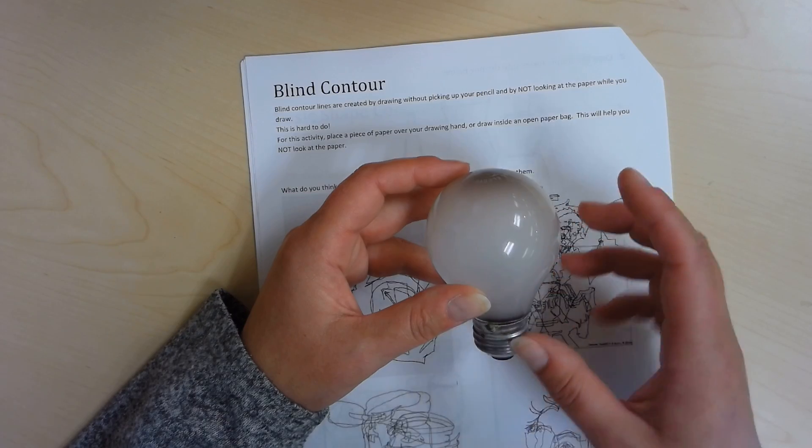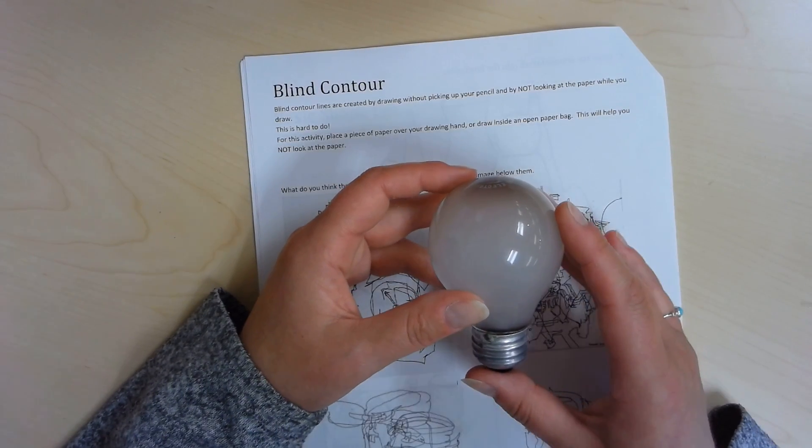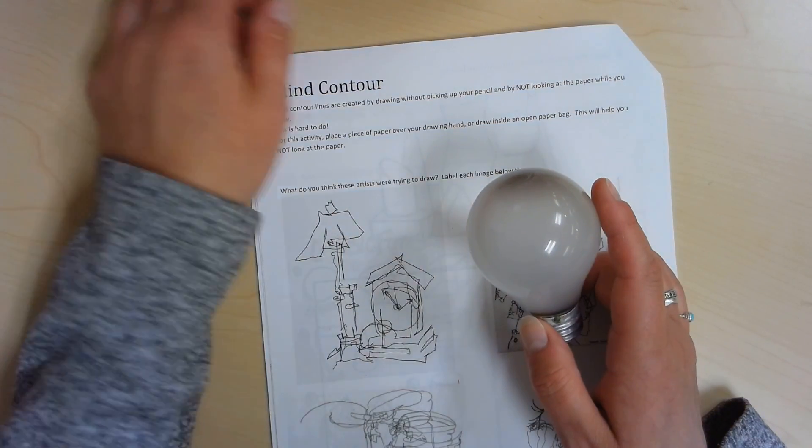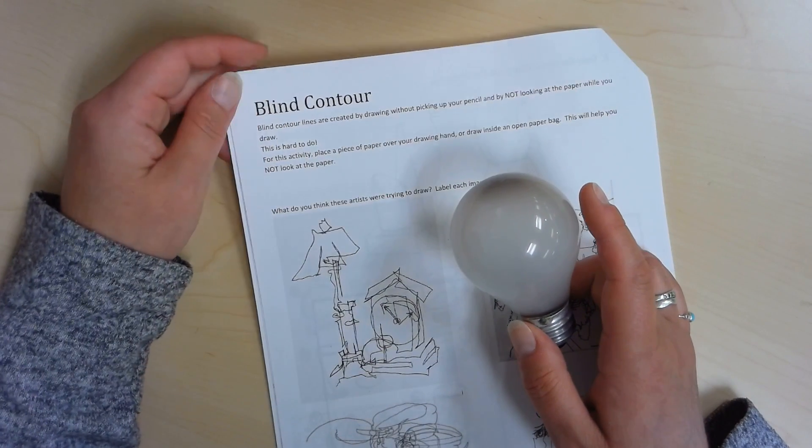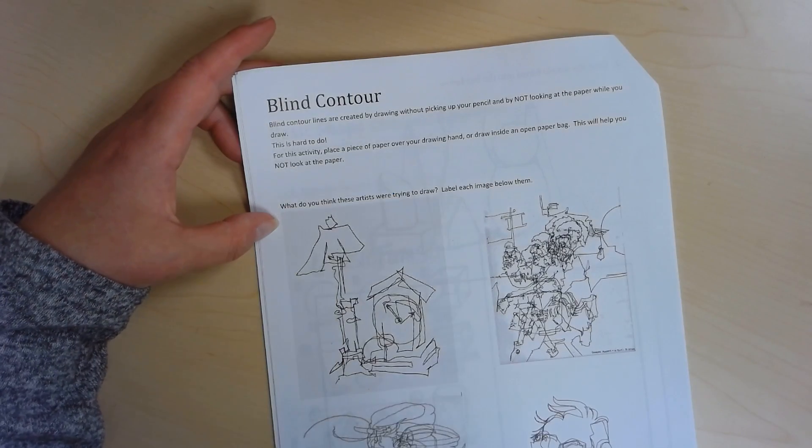So you would miss a lot if you weren't paying much attention to the object that you're drawing. So blind contour line drawings are fun to do and make us really pay attention to the thing that we're trying to draw.